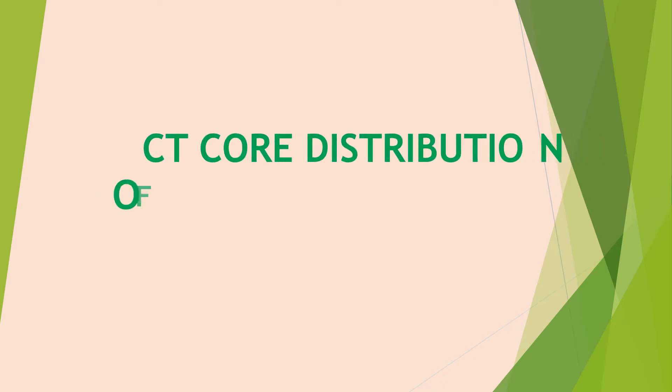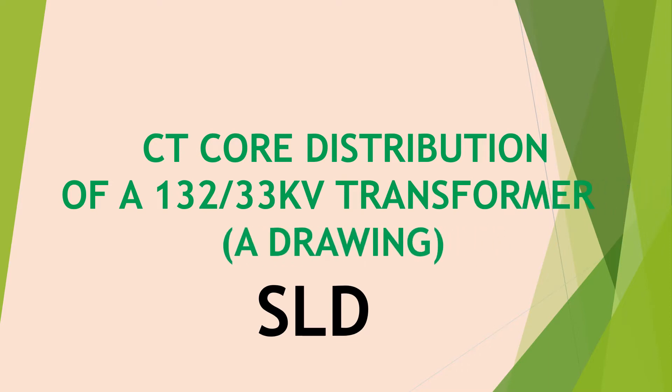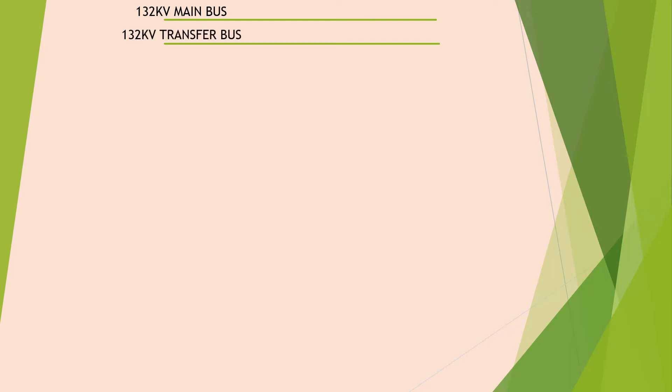Subject of the day: single line diagram of CT core distribution against a power transformer. This is the main bus, this is the transfer bus, this is the main bus side isolator 29A, this is circuit breaker 52, and this is the line side isolator 29L.